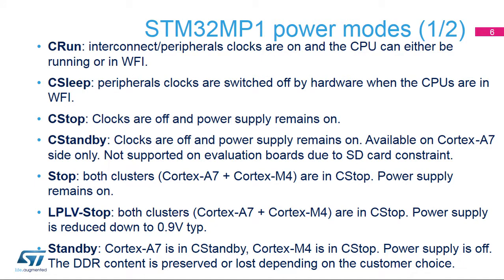This slide focuses on the definition of the power modes supported by the STM32MP1 microprocessor. There are power modes at domain level, prefixed with C, and at platform level with no prefix. The list is ordered from the lightest power-saving gain to the deepest. The first mode is C-Run, available on both the Cortex-A7 and Cortex-M4 sides. The CPU is running or in WFI (wait-for-interrupt), and the interconnect and peripheral clocks are available. C-Sleep mode can be seen as an add-on to C-Run, offering the possibility to automatically gate peripheral clocks when the CPU is in WFI. This feature can be configured independently for each peripheral, and C-Sleep is also available on both domains.